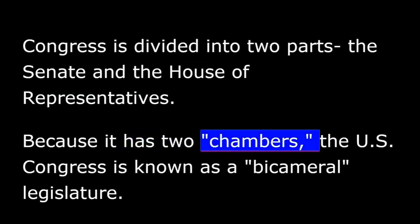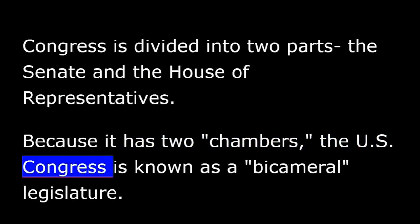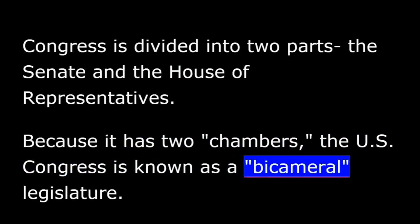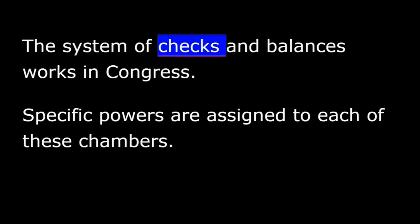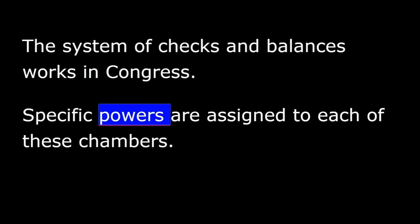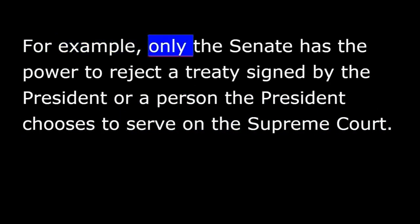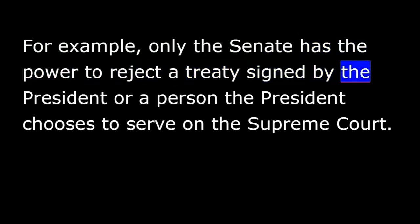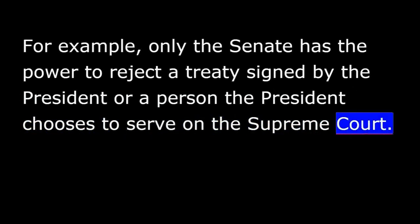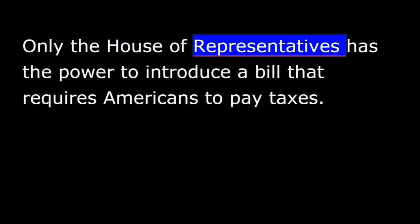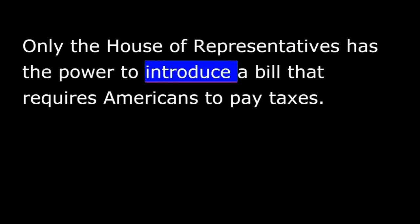Because it has two chambers, the U.S. Congress is known as a bicameral legislature. The system of checks and balances works in Congress. Specific powers are assigned to each of these chambers. For example, only the Senate has the power to reject a treaty signed by the President or a person the President chooses to serve on the Supreme Court. Only the House of Representatives has the power to introduce a bill that requires Americans to pay taxes.